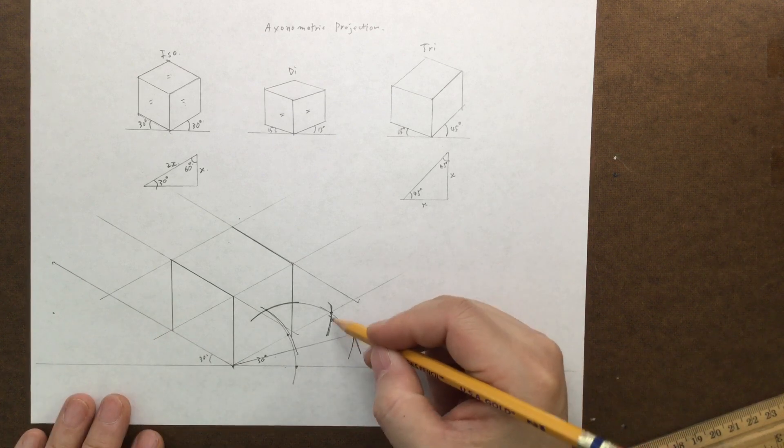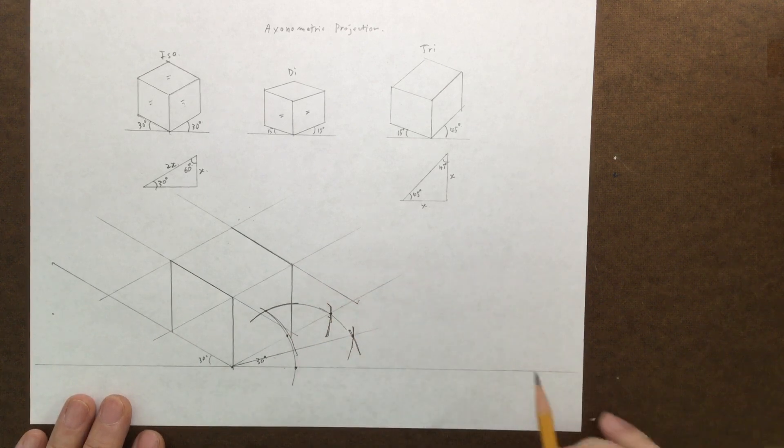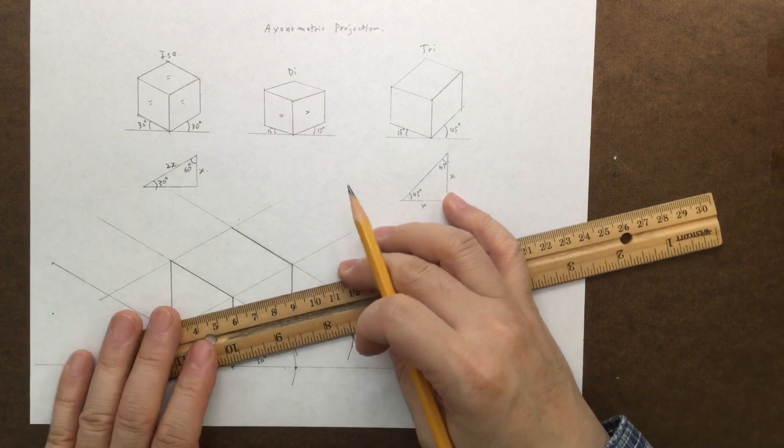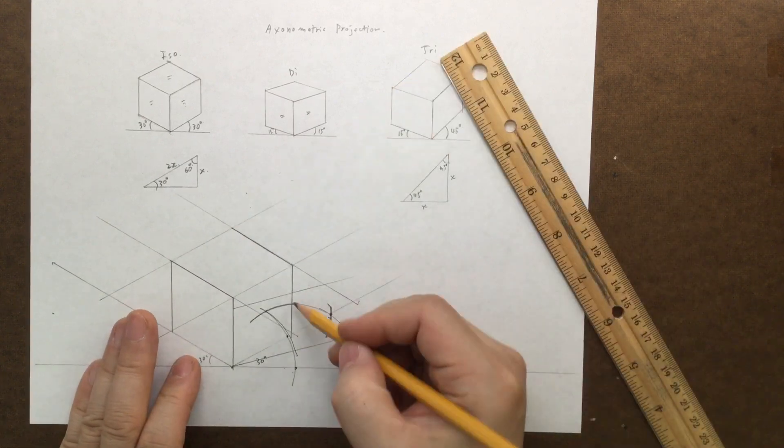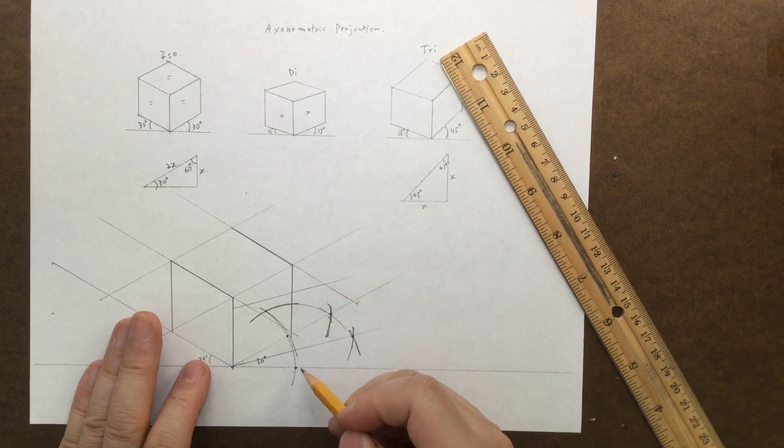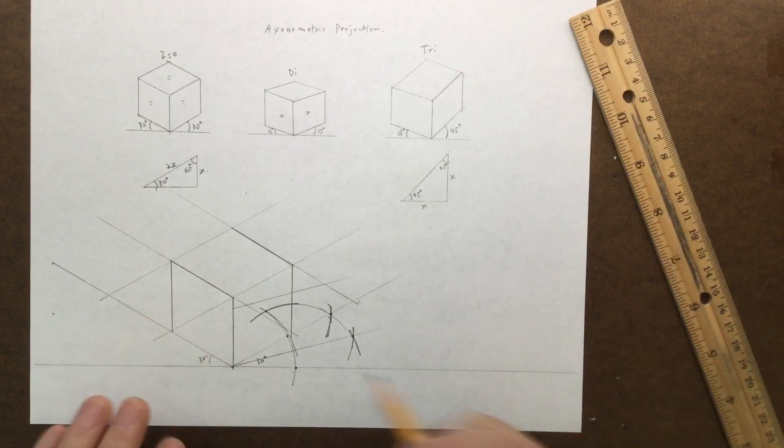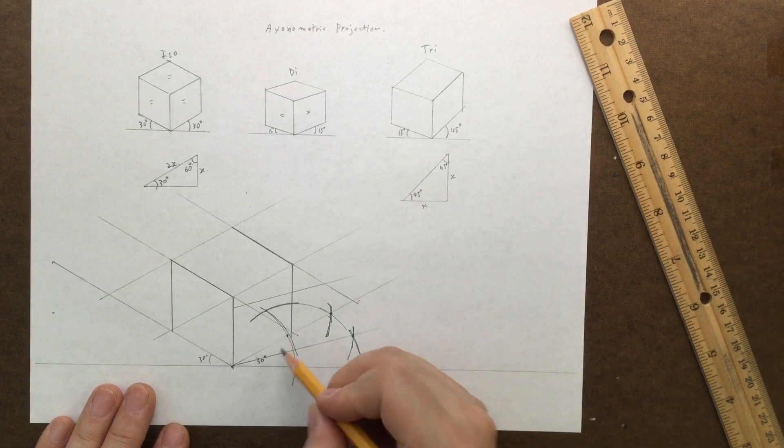So by doing that, you can see if I do this here, see how your box will be lower. The angle is, so that's how you create a 15 degree.